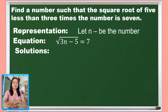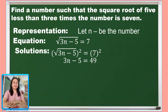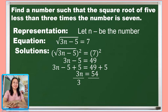Now let us solve the resulting equation. Since we have the square root on the left side, let us square both sides. The square root of 3n minus 5, when squared, is 3n minus 5, and the square of 7 is 49. To eliminate negative 5 on the left side, let us add both sides by positive 5, so 3n equals 49 plus 5, or 54. Dividing both sides by 3, 3n divided by 3 equals n, and 54 divided by 3 equals 18. So n is 18.